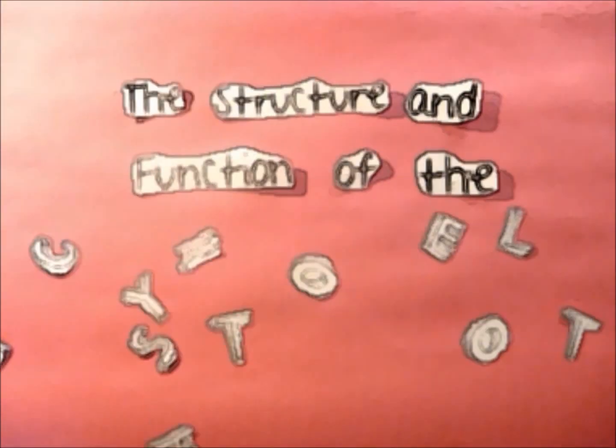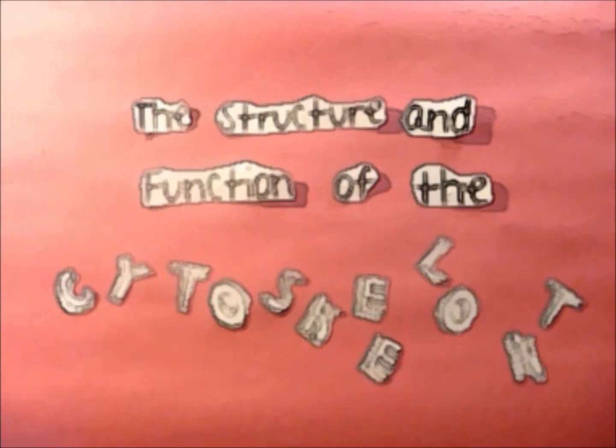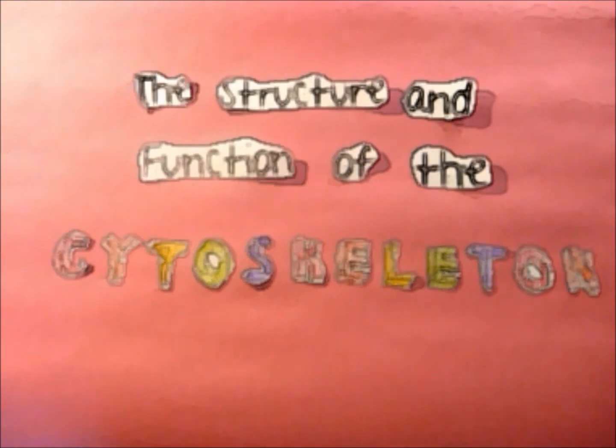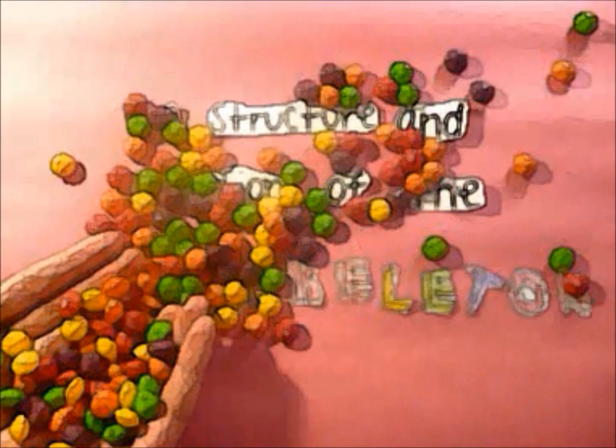The structure and function of the cytoskeleton. The cytoskeleton is composed of three major elements that form the filamentous structures which anchor the cell to the extracellular matrix.